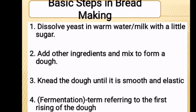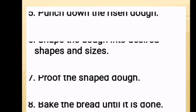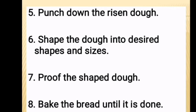Basic steps in bread making. Number 1: Dissolve yeast in warm water or warm milk with a little sugar. Number 2: Add other ingredients and mix to form a dough. Number 3: Knead the dough until it is smooth and elastic. Number 4: Fermentation — the term referring to the first rising of the dough. Number 5: Punch down the risen dough. Number 6: Shape the dough into desired shapes and sizes. Number 7: Proof the shaped dough. Number 8: Bake the bread until it is done.